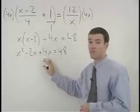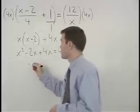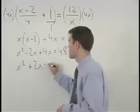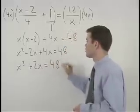And simplifying further on the left side, we have x squared plus 2x equals 48.